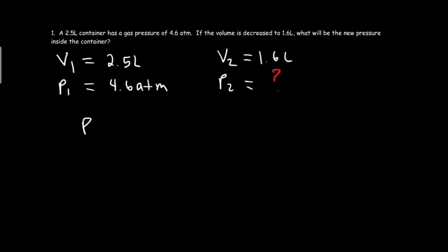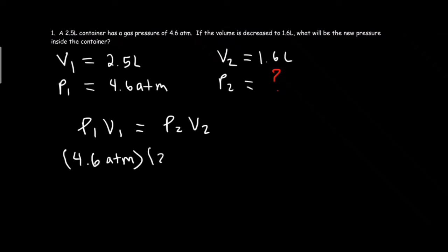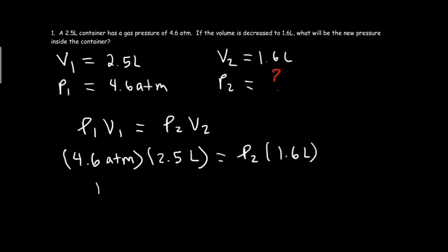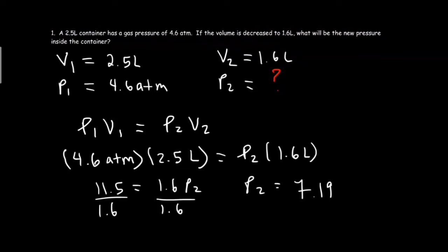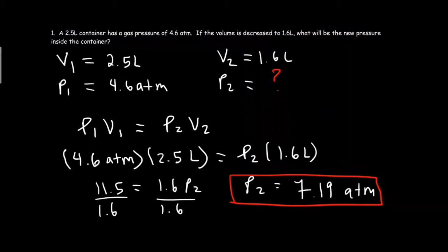Using the equation P1 times V1 equals P2 times V2: P1 is 4.6 atm, V1 is 2.5 liters, and V2 is 1.6 liters. So 4.6 times 2.5 equals 11.5, which equals 1.6 times P2. To solve for P2, divide both sides by 1.6. Therefore P2 equals 11.5 divided by 1.6, which equals 7.19 atm. As we can see, the value of P2 is 7.19 atm.